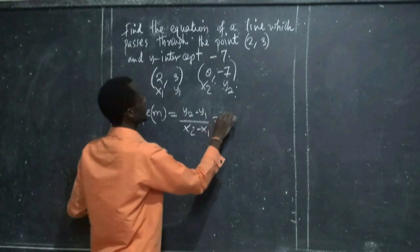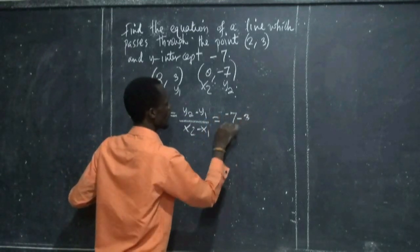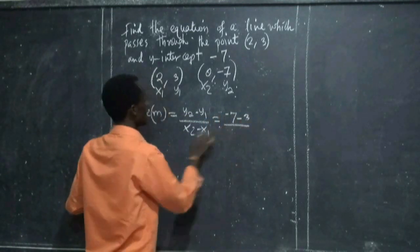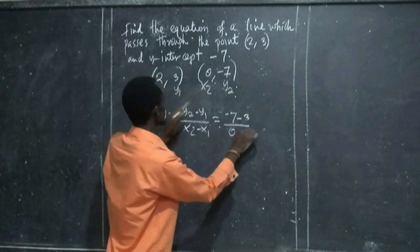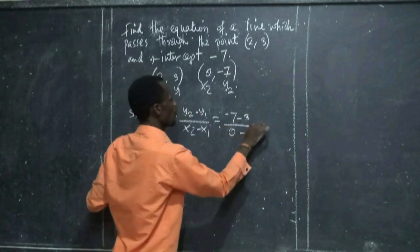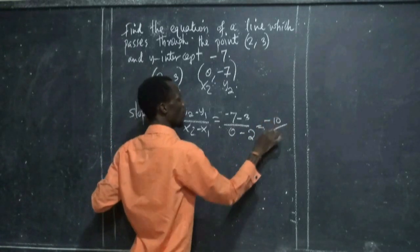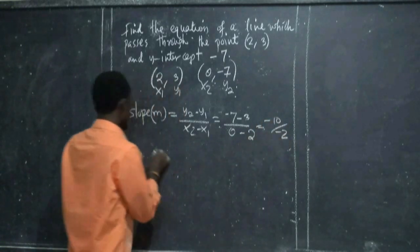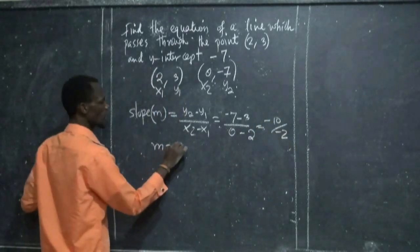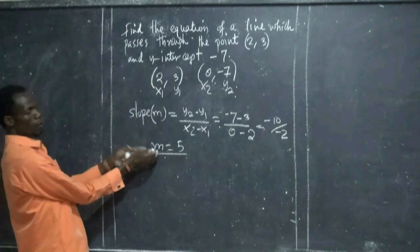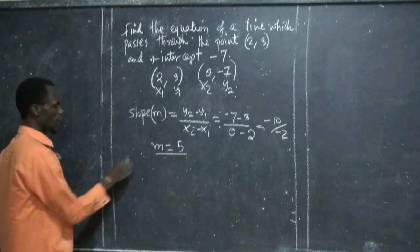That is to say negative 7 minus 3, over 0 minus 2. Which is equal to negative 10 over negative 2. Now our slope is equal to 5.